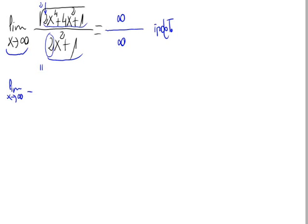For solving this, let's copy the limit down here. What we'll do is divide the numerator and the denominator by the x with the biggest exponent in the limit. On the denominator, the biggest exponent is x squared. On the numerator it is x to the fourth, but as it is inside a square root, it would be x raised to 4 halves, which equals x squared. So, we have to divide everything by x squared.